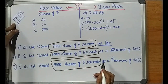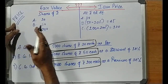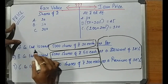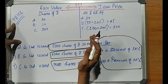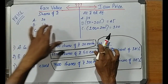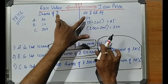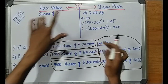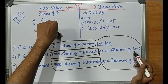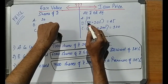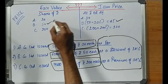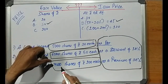To recap: look at the price-related sentence, split it — the first half gives the face value, the second half gives the issue price. Case A: 5000 shares of rupees 10 each, issued at par — face value 10, issue price 10. Case B: rupees 50 each, at a discount of 10% — 5 rupees discount, so issue price is 45. Face value is 50.